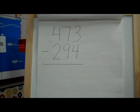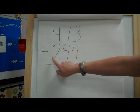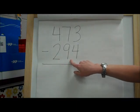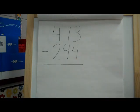Our first problem we're going to do is 473 minus 294. Now, just like in addition, one of the most important rules of subtracting is to line up your place values. It just helps keep everything neat and organized. So you've got to make sure you line those numbers up.